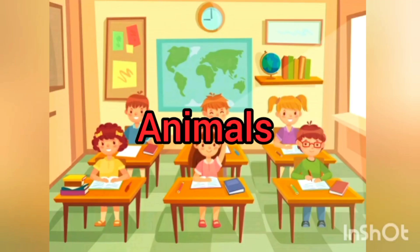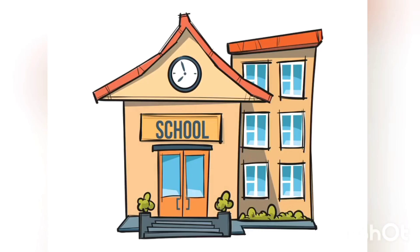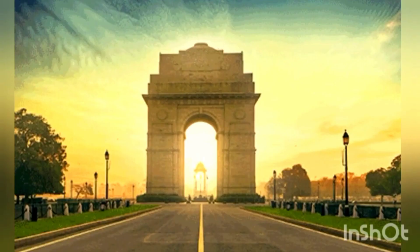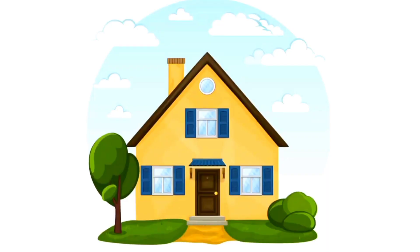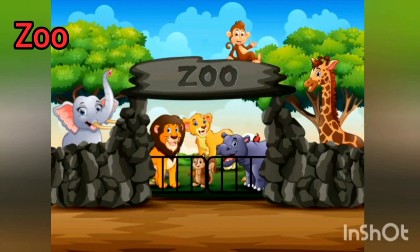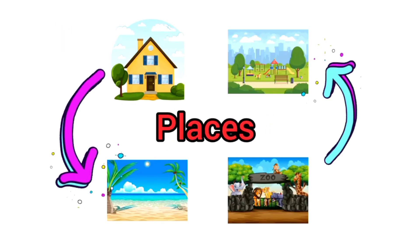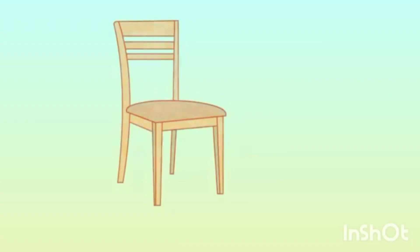Children, where do you go to study? Yes, you go to school. School is the naming word for a place, so a noun can be a name given to a place. Home, park, beach, zoo are names of places.